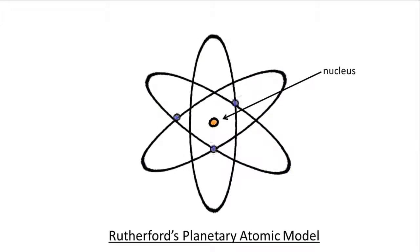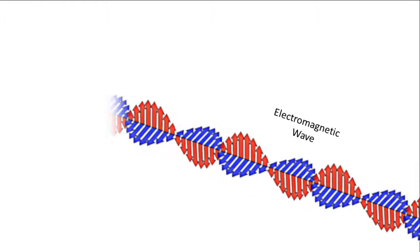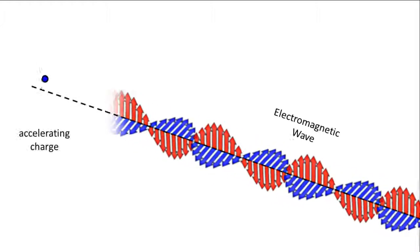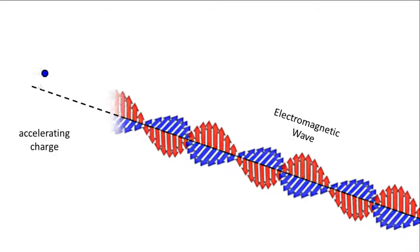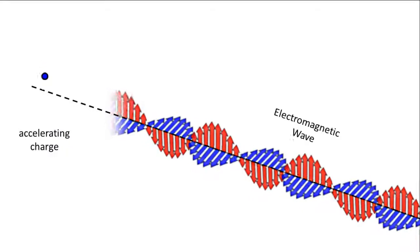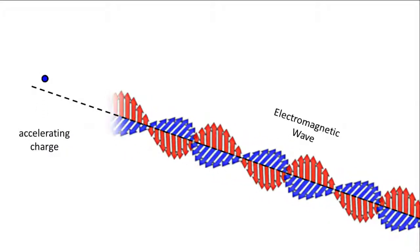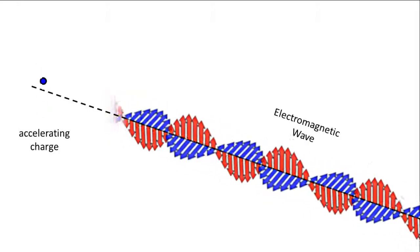Then Maxwell came along. Maxwell was the guy who showed that light is an electromagnetic wave. He also showed that any charged particle, when accelerating or decelerating, must radiate energy in the form of electromagnetic waves.